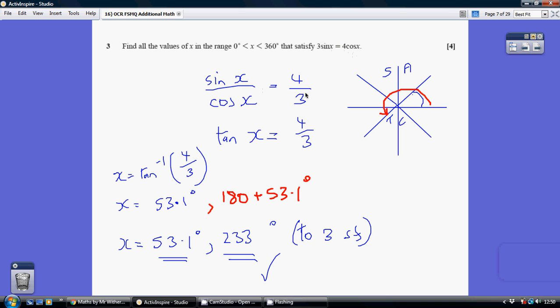So to get from here to here I've done two things, I've divided by 3 and I've divided by cos x. Now sin x over cos x is tan x, so we've suddenly gone from two trig ratios to 1 and now we can solve this. So choosing to inverse tan both sides, we have x being inverse tan 4 over 3.